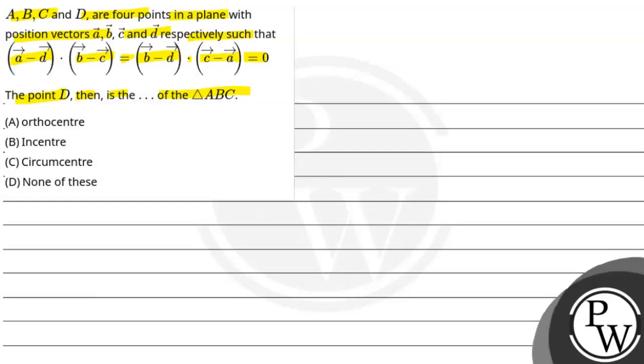The key concept of this question is: if we have a vector and b vector, and their dot product equals 0, this means a vector is perpendicular to b vector.